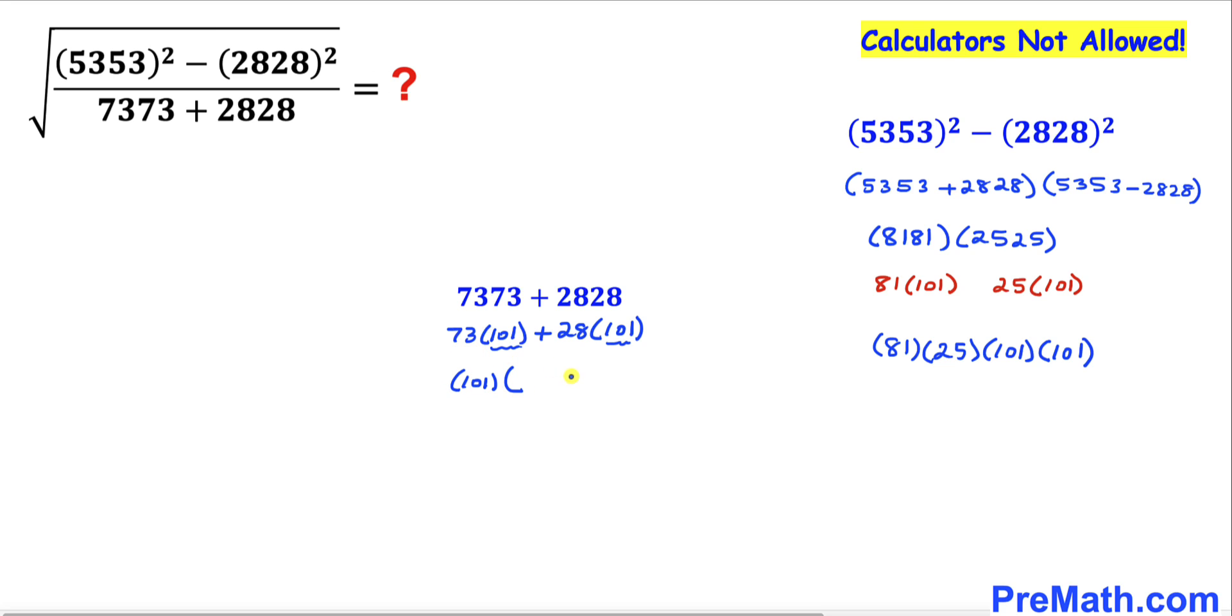Now 73 plus 28 is the same as 101. Therefore, this whole thing has become 101 times 101. Now let's focus on our original problem.